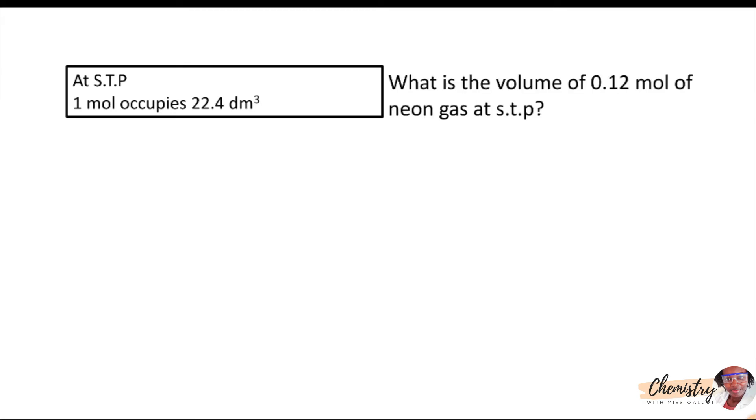If we were told that we had 0.12 moles of neon at STP and we wanted to find the volume, we would multiply 0.12 by 22.4 since every mole occupies 22.4 dm cubed at STP.